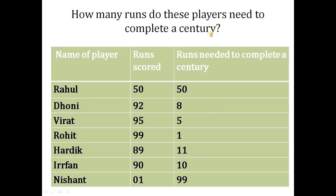Next question: how many runs do these players need to complete a century? Players' names are given: Rahul, Dhoni, Virat, Rohit, Hardik, Irfan, and Nishant. Their scores are: Rahul 50.